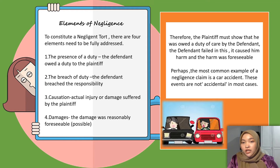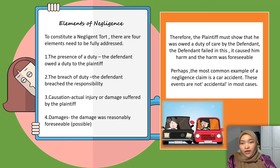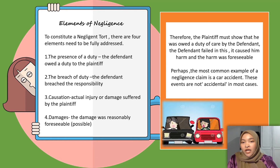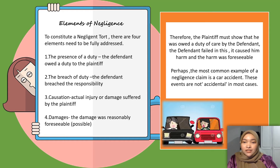To win a negligence claim, the plaintiff must show that he was owed a duty of care by the defendant, that the defendant failed in this duty, that it caused him harm, and that the harm was foreseeable. Perhaps the most common example of a negligence claim is a car accident, as these events are not truly accidental in most cases.